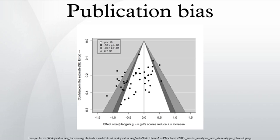Evidence: The presence of publication bias in the literature has been most extensively studied in biomedical research. Investigators following clinical trials from the submission of their protocols to ethics committees or regulatory authorities until the publication of their results observed that those with positive results are more likely to be published. In addition, studies often fail to report negative results when published, as demonstrated by research comparing study protocols with published articles.